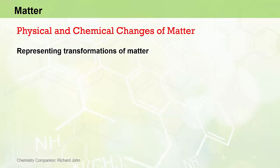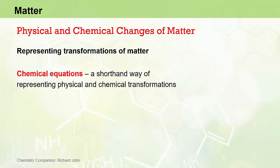When considering physical and chemical changes of matter, it is important that we have a clear, concise and consistent way of representing these changes or transformations of matter. Whether they be physical transformations or chemical transformations, we can use chemical equations to do this. Chemical equations are a shorthand notation or shorthand way of representing both physical and chemical transformations using chemical formulas and other symbols.